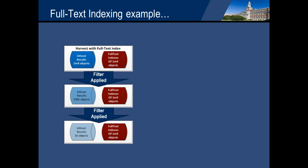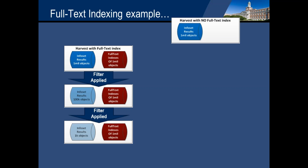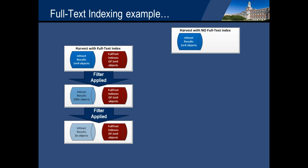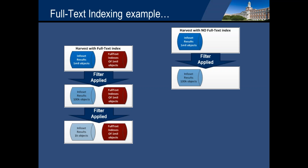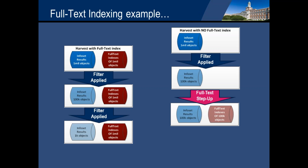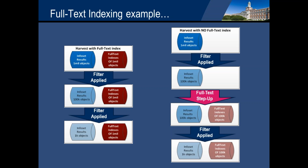There are potentially better options, which is to do the step-up. You perform your harvest without doing the index, get results of a million objects, perform some metadata filters to get down to 100,000 objects, and then run your full text step-up. Then your full text indexes are only going to be on those 100,000 objects, so you'll get better response and better performance. Even at that point, when you reduce it down to 1,000 objects, you're still running a full text search against the indexes of the 100,000 objects when you did the full text indexing.